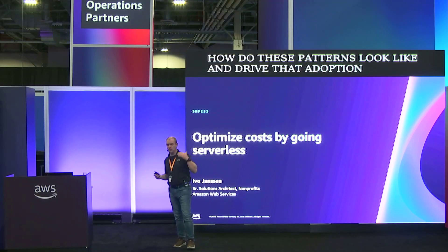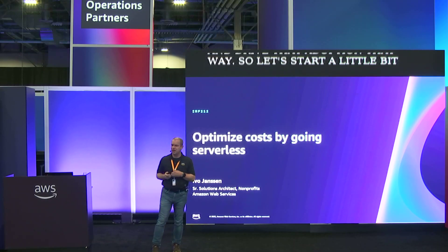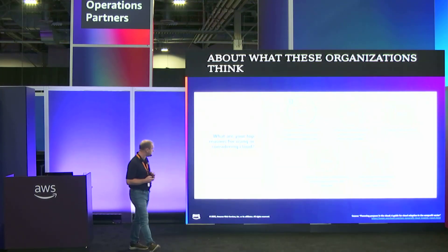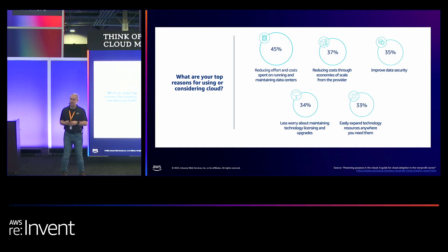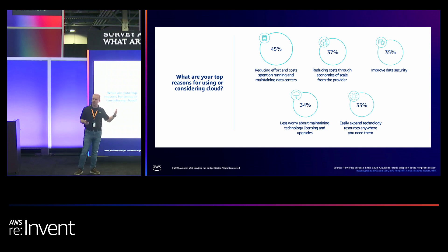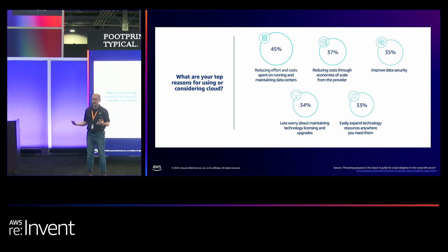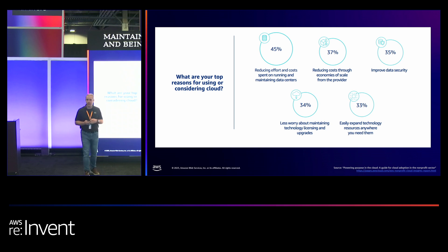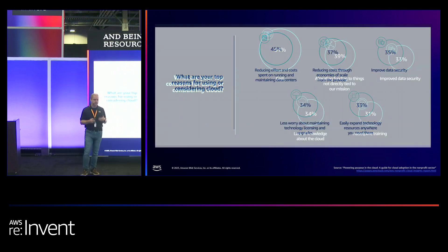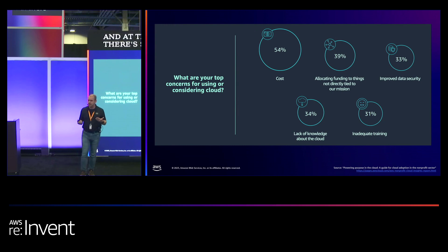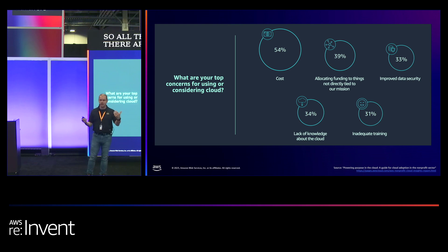Let's start with what these organizations think about when they consider cloud migration. We did a survey of around 700 nonprofits on their top reasons for moving to the cloud. Top reason is getting out of on-prem data center footprints. We're also seeing less worry about maintaining servers and licenses, being more agile, expanding resources when needed — doing that elasticity. At the same time, there are concerns around cost and security. All those items are ripe for serverless adoption, but we still don't see the rate of adoption we'd like.